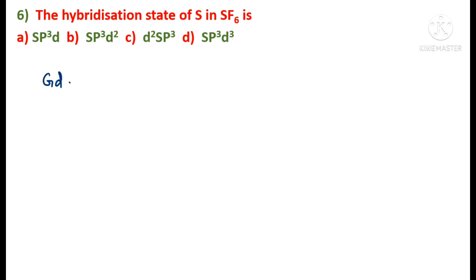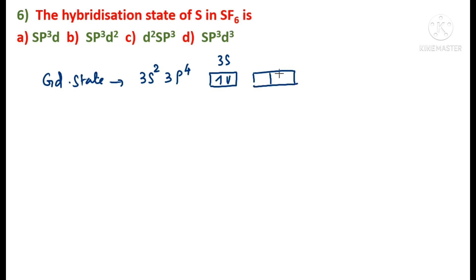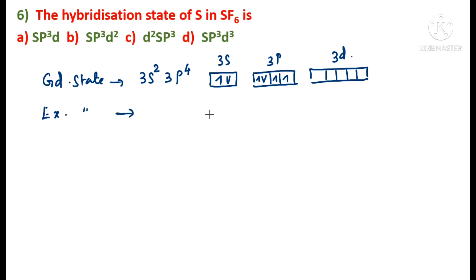In the ground state, sulfur has configuration 3S² 3P⁴, with two electrons in 3S, four in 3P, and the 3D orbital vacant. In the excited state, electron pairs in 3S and 3P get unpaired, and one electron from each pair is promoted to the vacant 3D orbital.